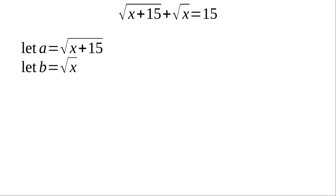So, we'll set b equal to the square root of x. That's the smaller of the two squares. And a equal to the square root of x plus 15, which is the larger of the two squares. That means we can rewrite the original equation as a plus b equals 15. And from the previous observation, we know that a squared less b squared must also be 15, because the difference between the squares is 15.